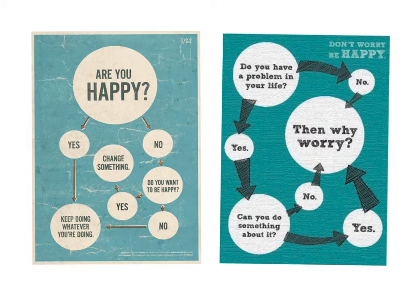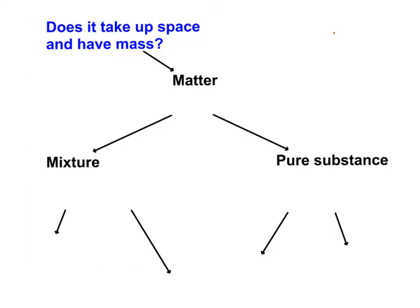Check out this next one. So, in your notebook, I want you to write this. Does it take up space and have mass? Then it is matter. We know there are two different types of matter: mixtures, or pure substances. And we know that each of those also have two more kinds each. Draw this — you will need a green pencil and a red pencil too. Go pause the video and do that now.